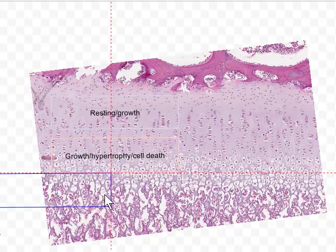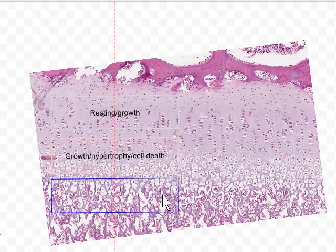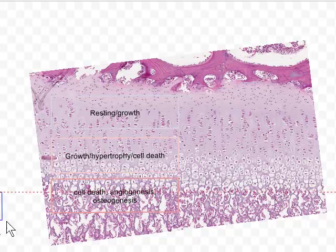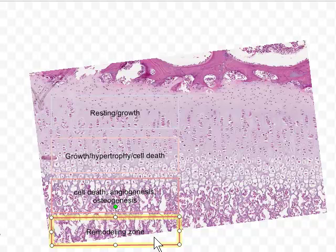Then beneath that again is the zone in which you have frank cell death and also osteogenesis, the formation of bone on calcified cartilage and angiogenesis, the ingrowth of blood vessels. And finally down at this end on the opposite side of the epiphyseal plate to the resting and growth zone is the zone in which bone formation has occurred and the bone is now being remodeled to form mature lamellar bone.